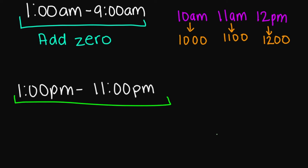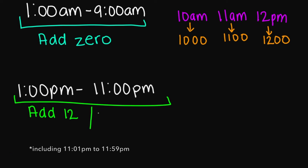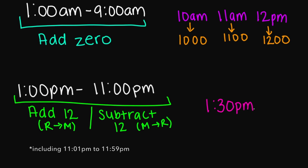So now let's look at 1 p.m. to 11 p.m. If you are converting times from 1 p.m. to 11 p.m., then you're going to add 12 to the hour number. And if you're converting from military to regular, then you'll subtract 12. For example, if we had 1:30 p.m., I'm going to add 12 to my hour number — this is going to equal 1330. So your military time is going to be 1330.